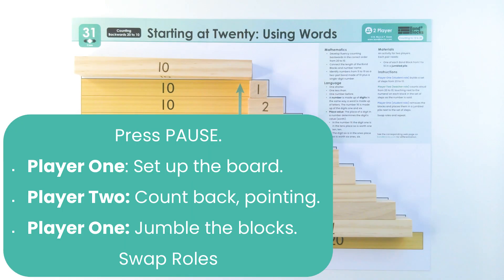Now it's your turn to count backwards from 20 to 10. Player 1 will set up the board. Player 2 will count backwards, pointing. Then Player 1 will jumble the blocks and you'll swap roles. Remember to hold that n sound when you count backwards.